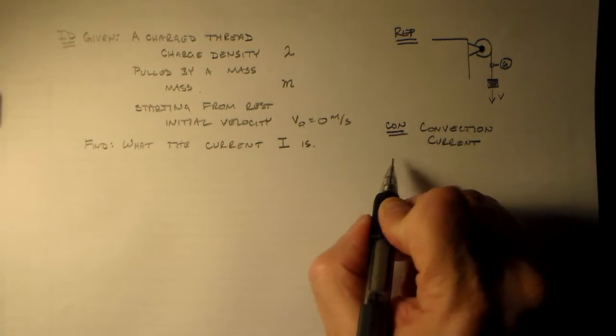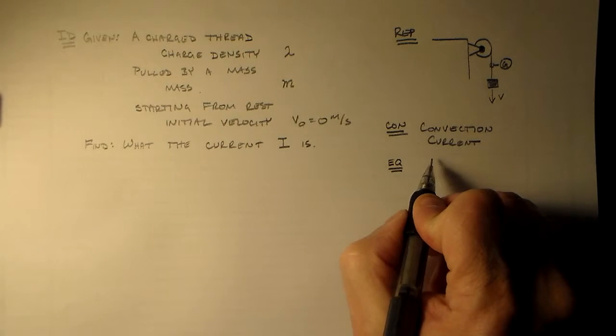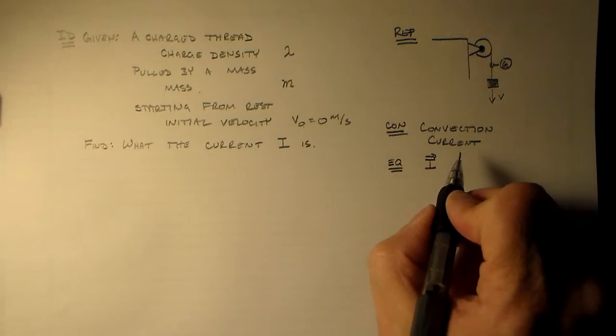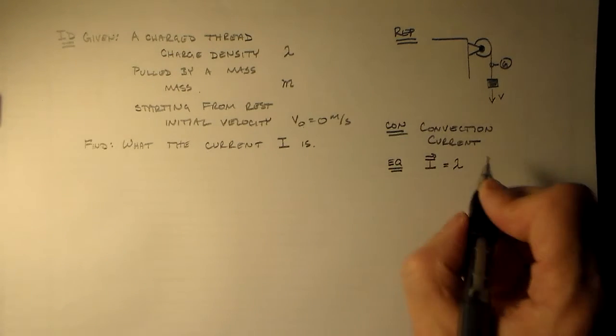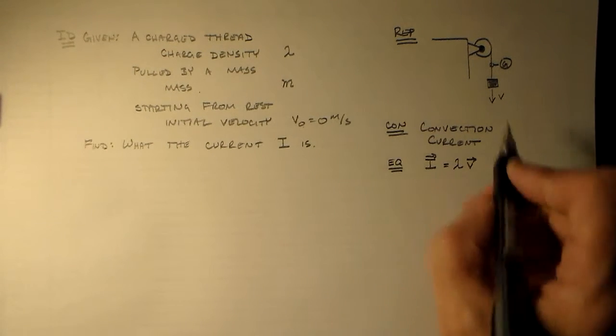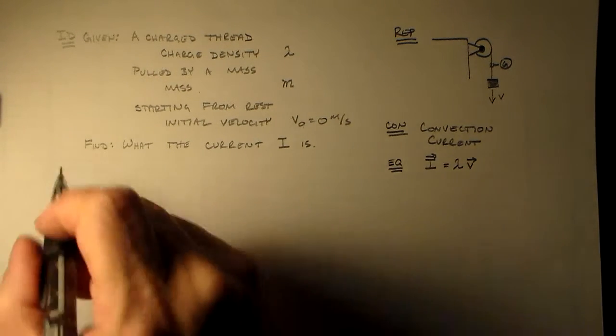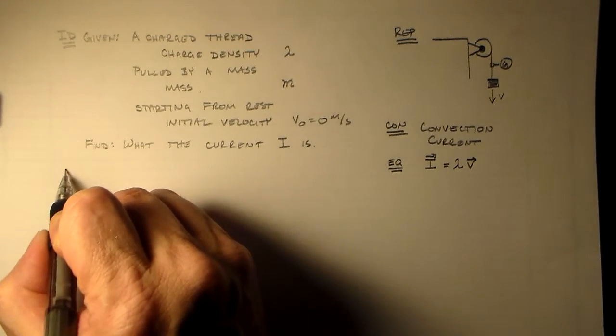And what we need for our convection current, so if we had some equation for that, that would just be I is going to equal lambda, and in this case, the charge density times the velocity of the wire, all right? So how fast, I guess not wire, thread. I've already stopped this because I kept calling it a wire before.